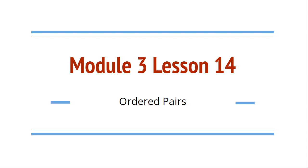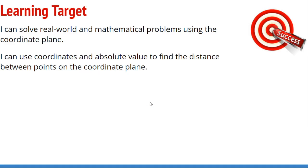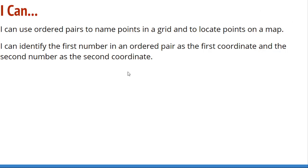Module 3, Lesson 14: Ordered Pairs. I can statements: I can solve real-world and mathematical problems using the coordinate plane. I can use coordinates and absolute value to find the distance between points on the coordinate plane. I can use ordered pairs to name points in a grid and to locate points on a map. I can identify the first number in an ordered pair as the first coordinate and the second number as the second coordinate.